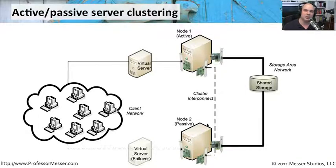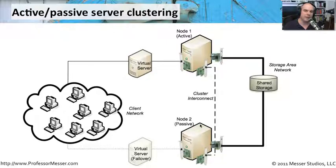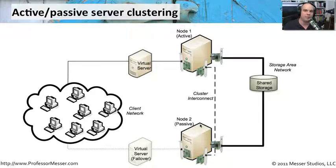Active-passive systems are generally much easier to implement because both systems are exactly the same type. Active-active tends to be more complex, because multiple systems are talking to multiple servers simultaneously, requiring tracking to ensure everyone is communicating with the right systems at any given time. But whether you're using active-active or active-passive, you have systems that are redundant and available should there be any problems on your network.